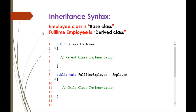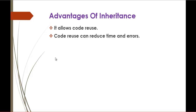Now we'll see the inheritance syntax. As we learnt, Public Class Employee is the Base Class. We are inheriting the Base Class to our class and that class we called FullTimeEmployee — the Derived Class. The Derived Class is the one which inherits the properties from the Base Class. The main advantage of inheritance is it allows code reuse. The major code common between the two classes — PartTimeEmployee and FullTimeEmployee — was moved into one class and reused in both. Code reuse reduces time and errors, making your application more effective. Thank you, please subscribe to ANKPRO training. Have a great day.